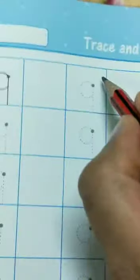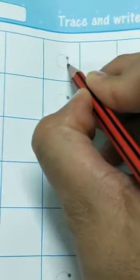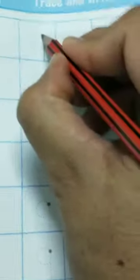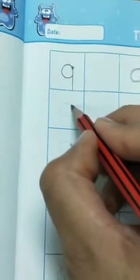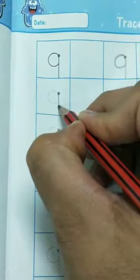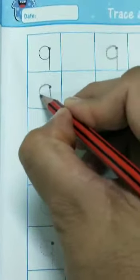See, first of all, we will start from here, from this dot. We will make a standing line and then a circle. This is how we will trace number 9. I'll trace one more for you. We will start from here, from this dot, and then standing line and then a circle.